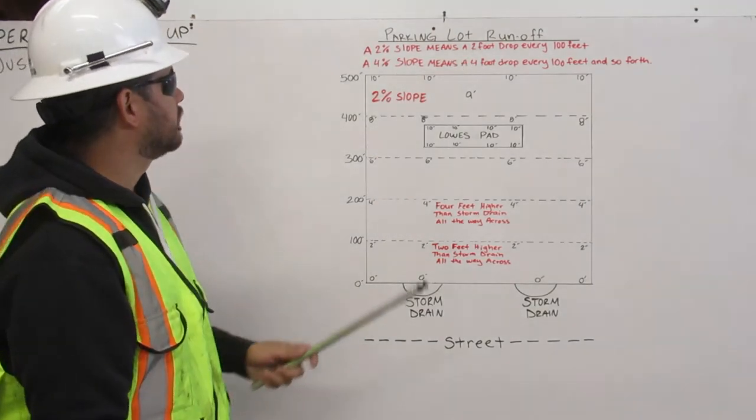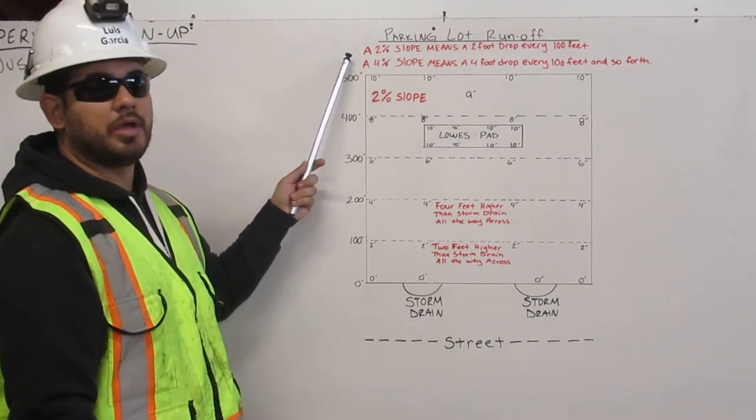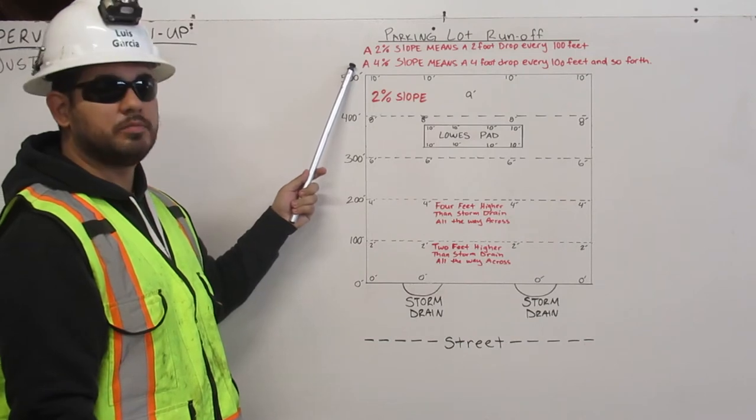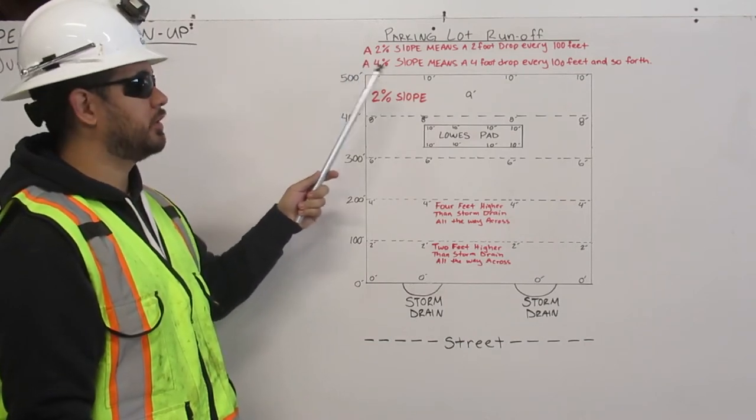Parking lot runoff. A 2% slope means a 2 foot drop every 100 feet. A 4% slope means a 4 feet drop every 100 feet and so forth.